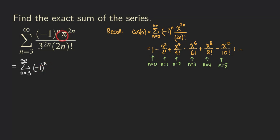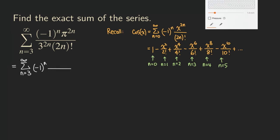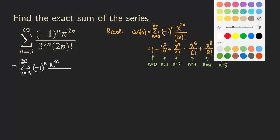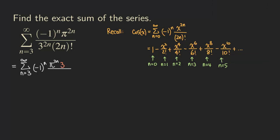We need to figure out how to combine pi to the 2n and 3 to the 2n. If we bring 3 to the 2n to the top, it becomes 3 to the negative 2n, because we negate the original exponent. So we get pi to the 2n times 3 to the negative 2n in the numerator, and then 2n factorial in the denominator.